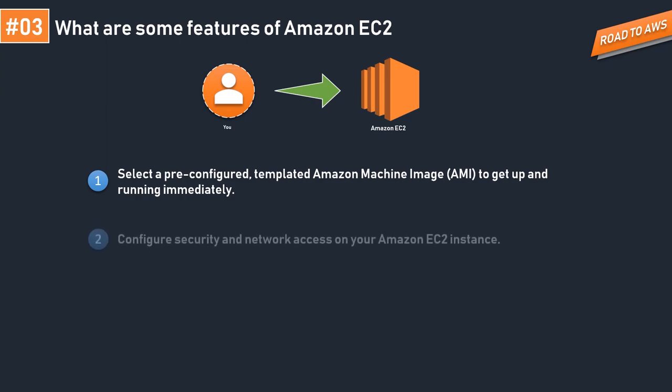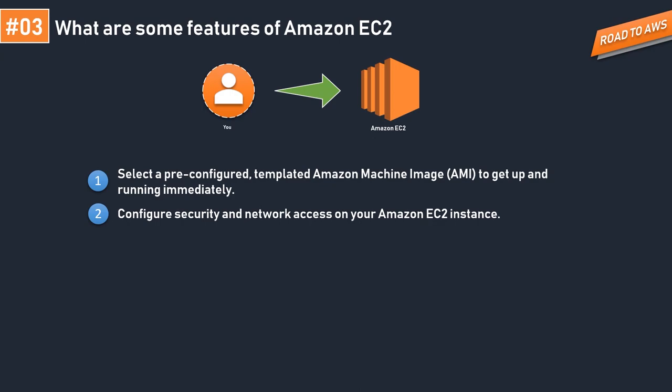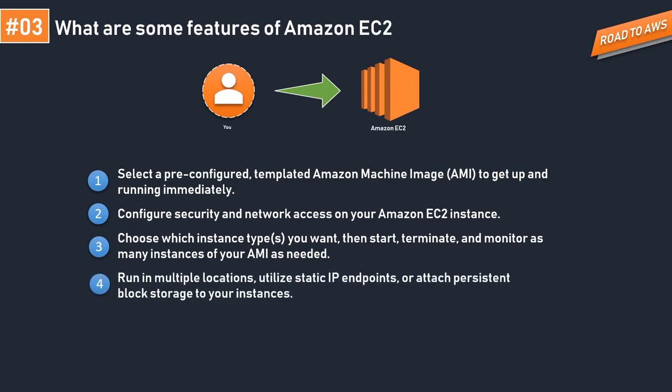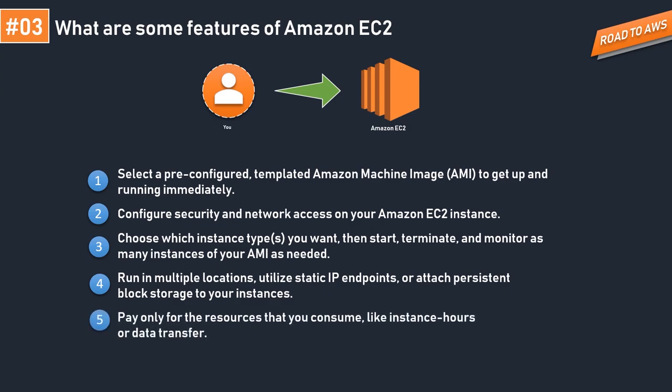AMI can help you configure security and network access on your EC2 instance. You can choose the type of instance you want and spin off, terminate, and monitor as many instances as you want from the AMI. You can run instances in multiple availability zones, make use of static IPs, and attach persistent storage to ensure data is secure even if you terminate the instance. Most importantly, you pay for only the resources you consume — it's a pay-as-you-go facility.